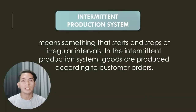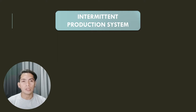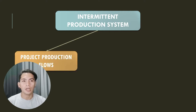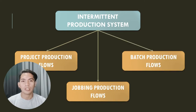Intermittent means something that starts and stops at irregular intervals. In the intermittent production system, goods are produced according to customers' orders. There are actually three types of intermittent production system: first is project production flows, second is jobbing production flows, and third is batch production flows.